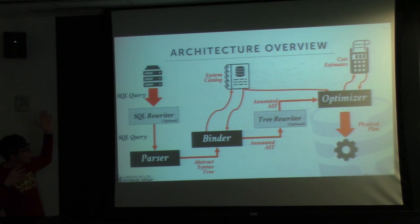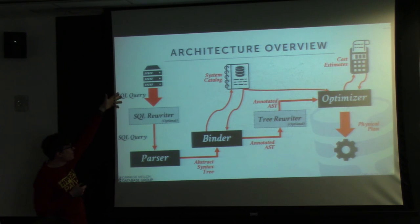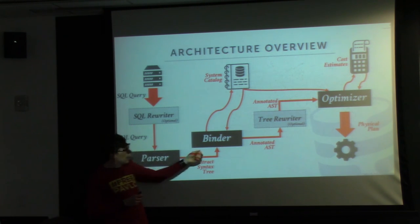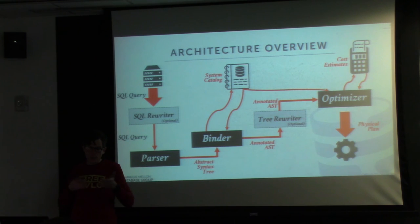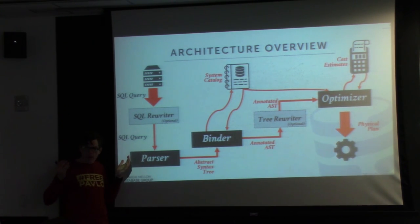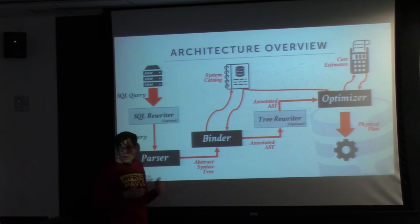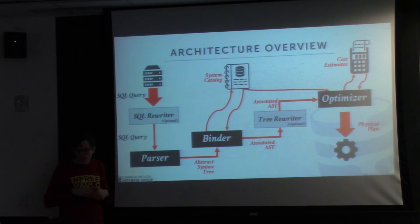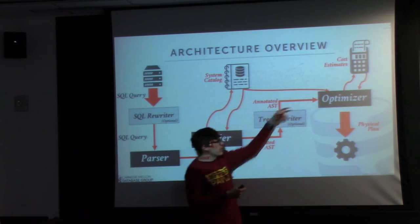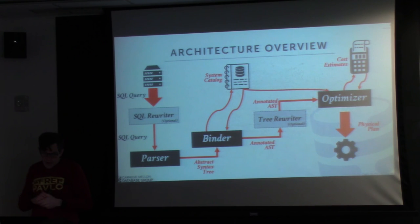Here's a quick high-level overview of the query optimizer architecture. An application submits a SQL query. The first phase is the SQL rewriter — taking the raw SQL string and applying basic transformations like converting a bunch of ORs into an IN clause. Anything in the dark boxes — the parser, binder, and optimizer — are things you actually need to have. The boxes in light gray are optional. The SQL rewriter spits out a SQL query, which passes into the parser, which breaks the string into tokens and generates an abstract syntax tree explaining what the SQL query was about.